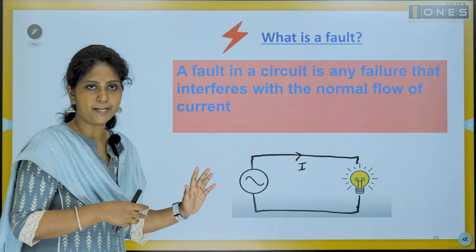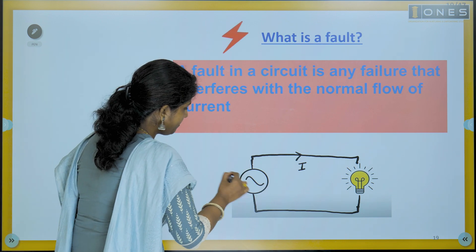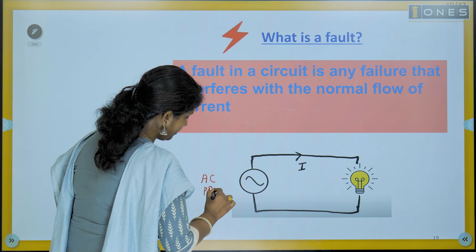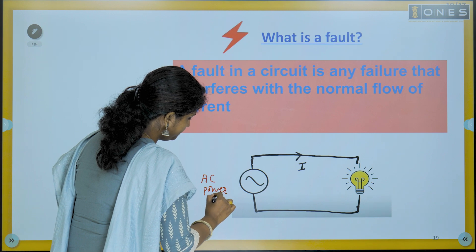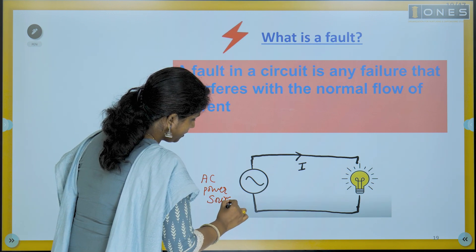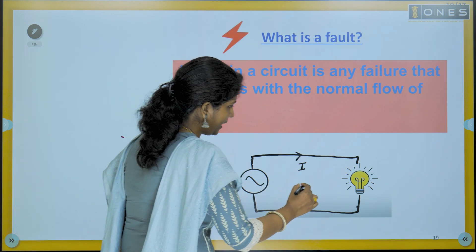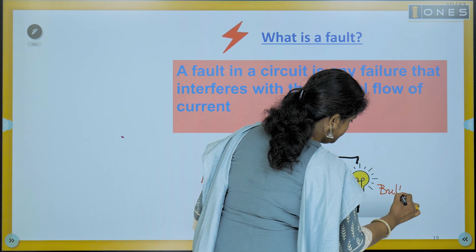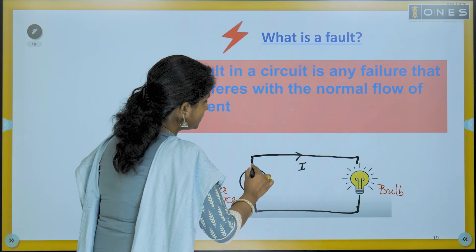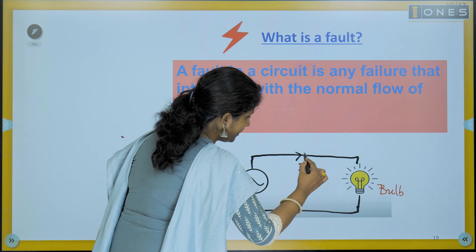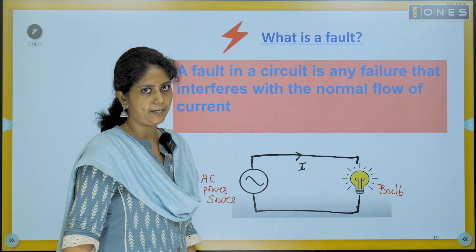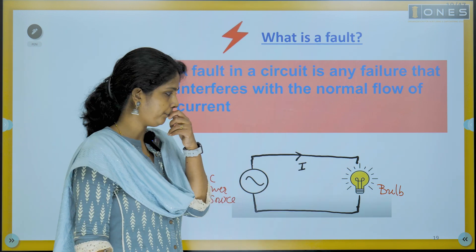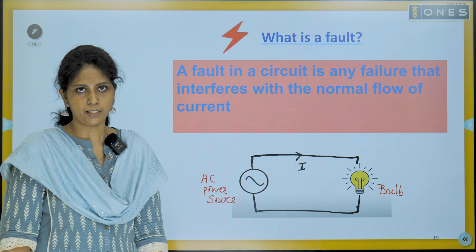Let us take a circuit. Let us have an AC power source. We have a power source, and here we have an electric bulb. Current I is flowing through the bulb and the bulb is glowing. This is a normal condition.